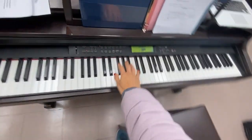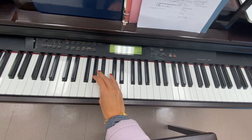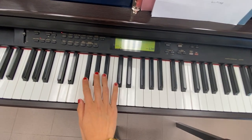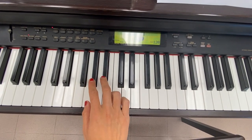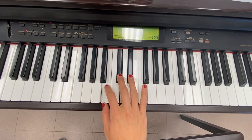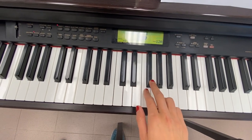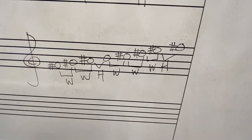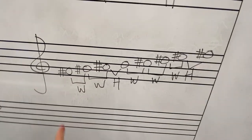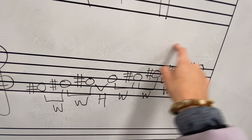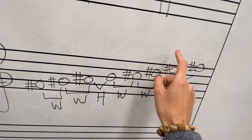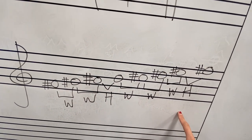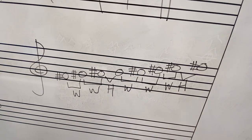Let's play it on the piano. Whole step, whole step, half step, whole step, whole step, whole step, half step. So that's how you build a major scale — starting with any note, pick any note, write it out one step at a time, and make sure you follow this pattern of whole steps and half steps. And that's how you get a major scale.